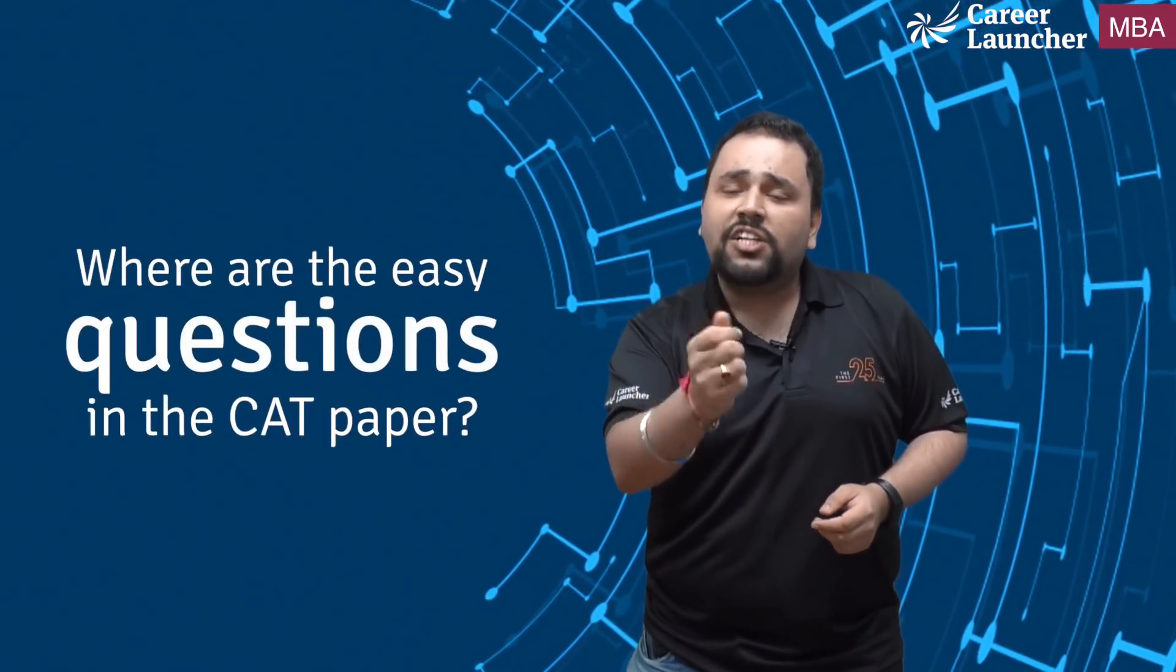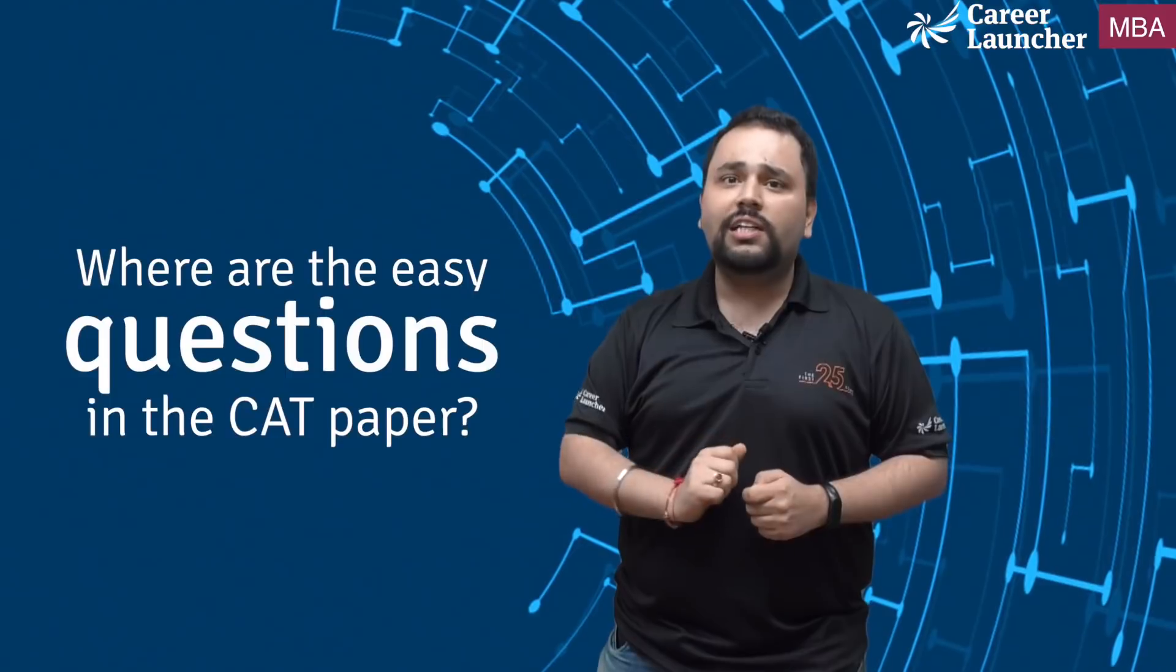What we've been able to go ahead and do is create a CAT analytics for you whereby we will be able to share what is that ideal combination of attempts to accuracy that one should be aiming for considering you are aiming for a 99 percentile or a 95 percentile or an 85 percentile. And the second thing that we will try and answer is, is it possible to come up with some sort of a trend regarding where are those sitters actually hiding? Can I analyze where will I find those easy questions which I need to spend a little time on and get my marks in order to score that coveted 99 percentile.